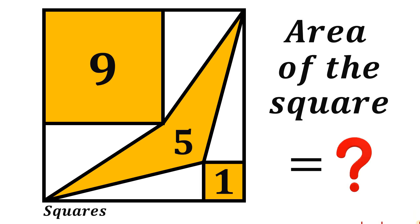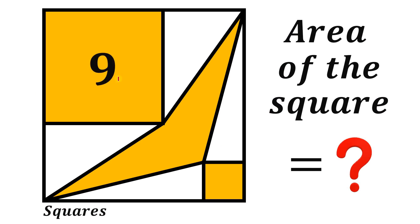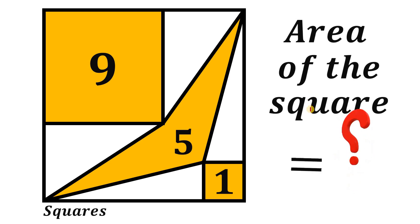Can you solve this geometry challenge? Here's the question. Given this big square, the area of this medium square is 9 square units, the area of this quadrilateral is 5 square units, and the area of this small square is 1 square unit. Our goal in this question is to find the area of the big square. Pause the video right now and see if you can answer this question.